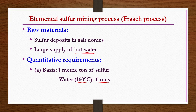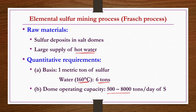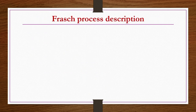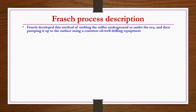The water temperature must be above the melting point of sulfur (112–119°C) to melt elemental sulfur and form molten sulfur. Dome operating capacity is 500 to 8000 tons per day. Frasch was the scientist who developed this method of melting sulfur underground and pumping it to the surface using common oil well drilling equipment. Holes are drilled to the bottom of sulfur-bearing strata at a distance of 150 to 750 meters underground.